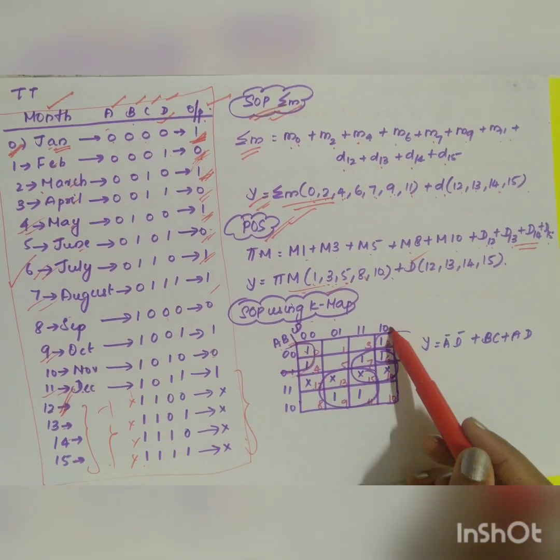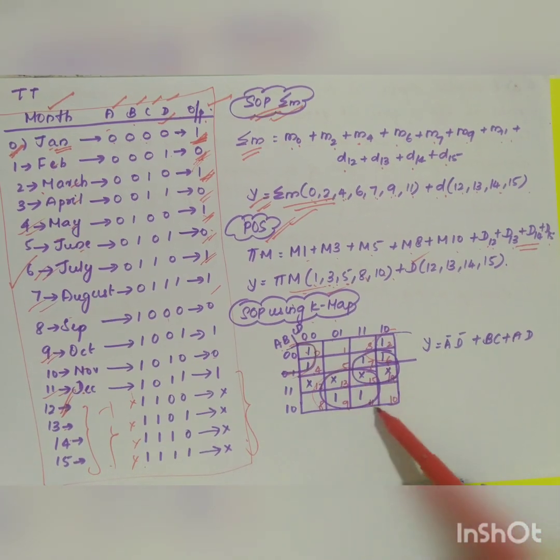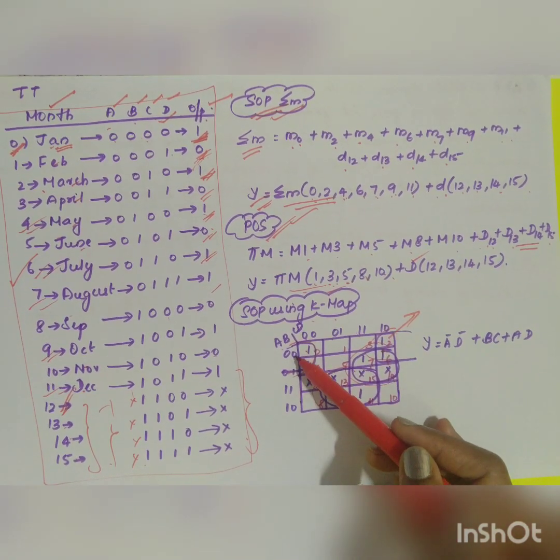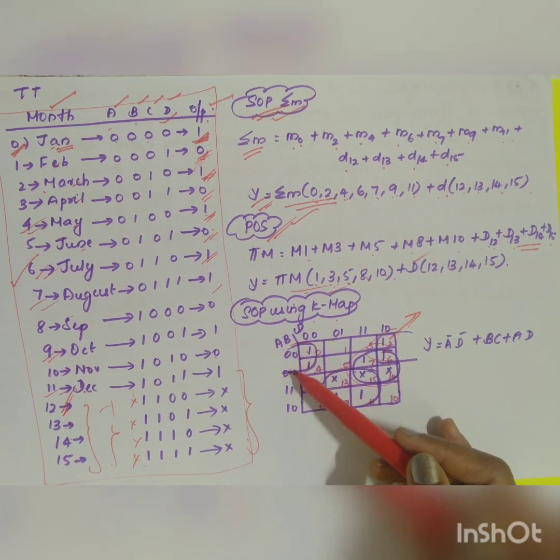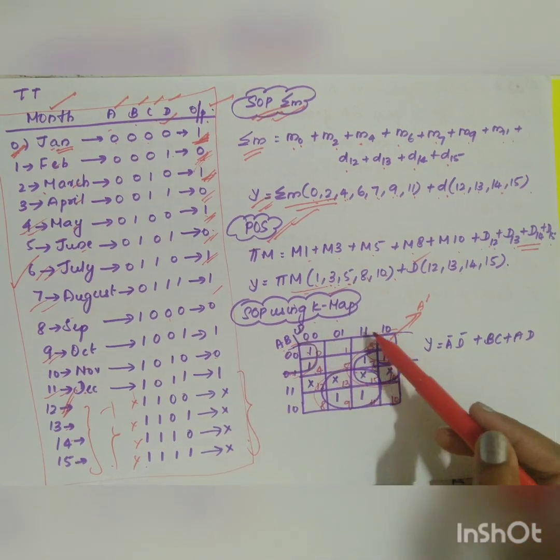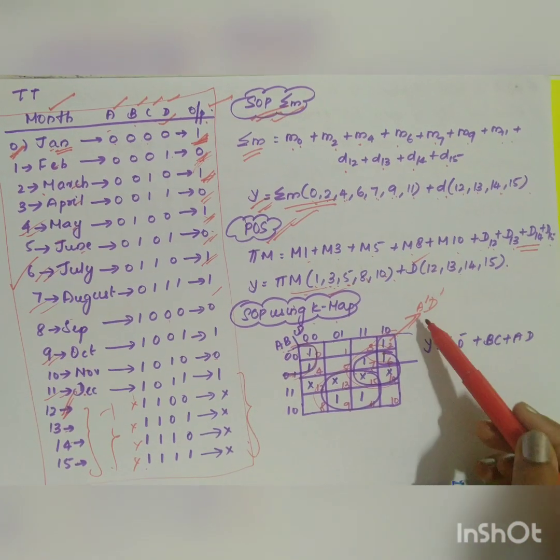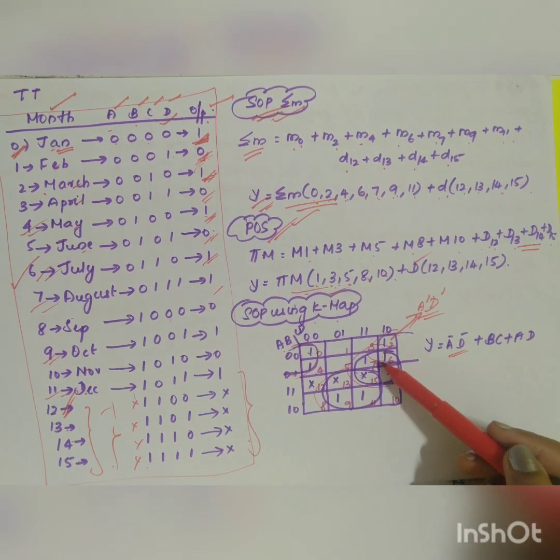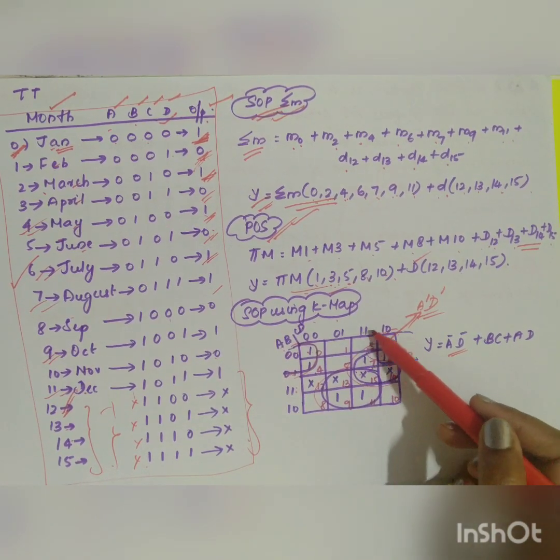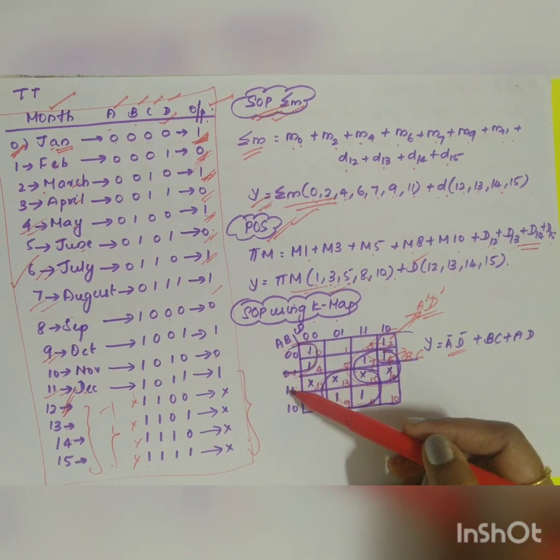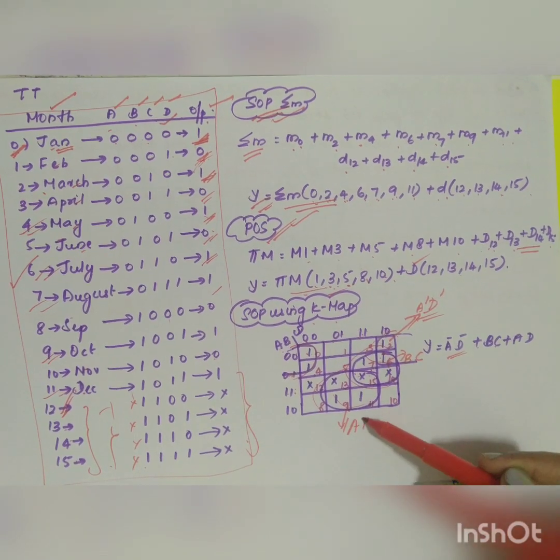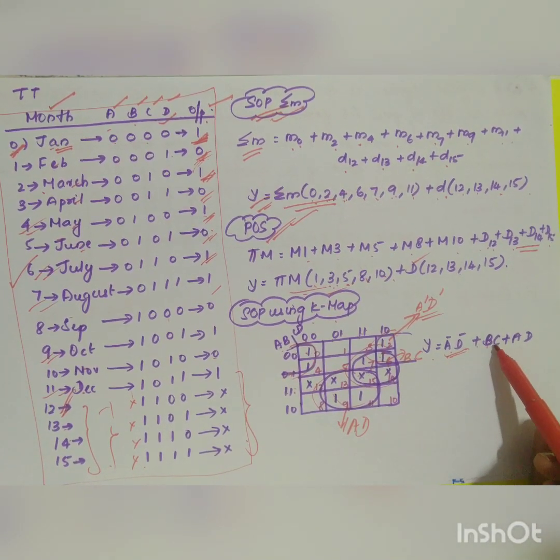Now how will you group? The adjacent 2 can be grouped together. Then this 4 can be grouped together and these 4 can be grouped together. What will be your value? This value is 0, 0, same. 0, 1 will get cancelled, so A bar. This will be A bar and you have 0, 1, so D bar. So A bar D bar. Now next one if we take this, what will be your value? 0, 1, so 1, B. So this will be B and here you have C, B, C. Then for this what is the value you have? You have A. A and 0, 1 will get cancelled: A, D. So Y is equal to A bar D bar plus B C plus A D.